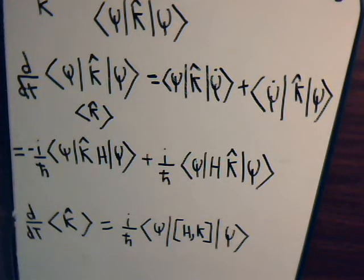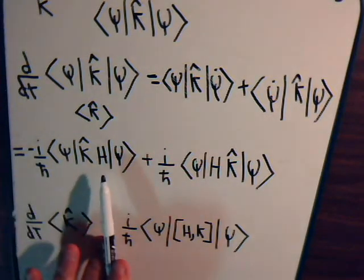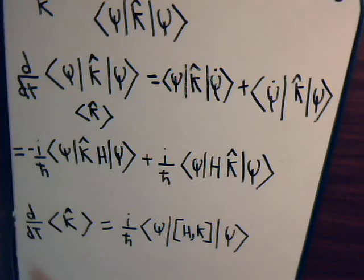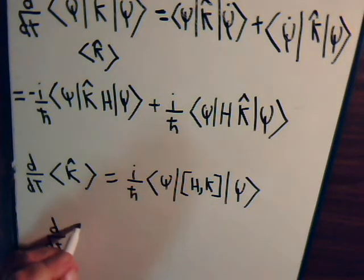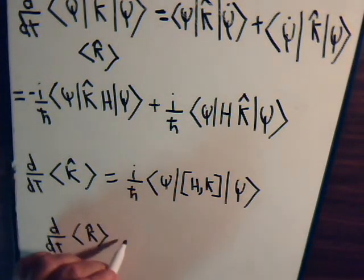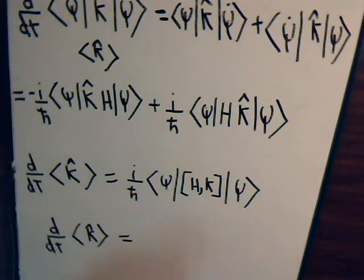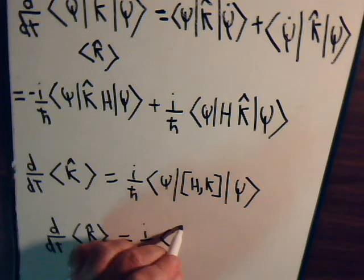Remember what we discussed in the previous video when we were discussing the momentum-position commutator — that the commutator [H, K] is equal to H·K minus K·H. Many times you see the expression written simply as: d⟨K⟩/dt is equal to i over h-bar times [H, K].